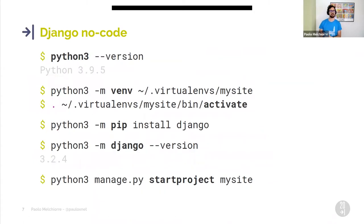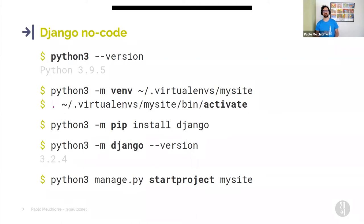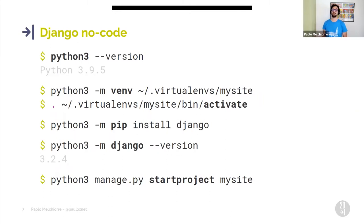To create a Django project, I use the latest Python 3 stable, create and activate a virtual environment in which I install the latest stable Django. Then, using the Django start project command, I create the basic files for our project. Let's see what it takes to add Postgres to this newly created project.